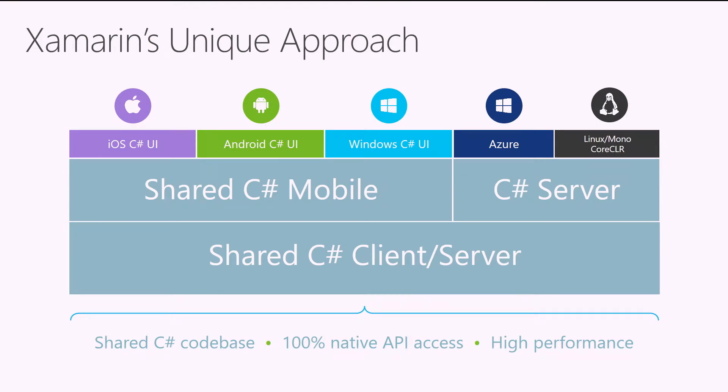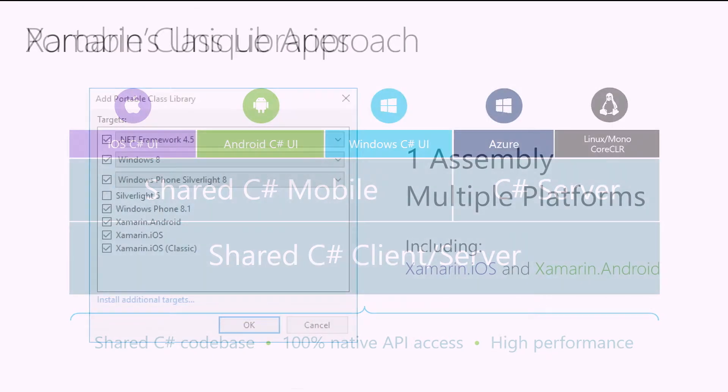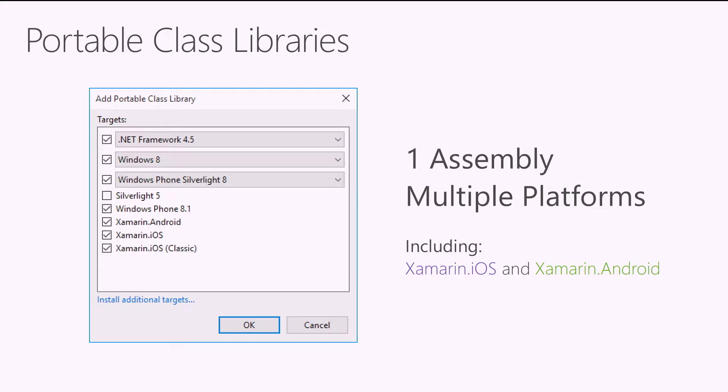When developers are looking to share code, the first place we point them is portable class libraries (PCLs). A PCL is essentially a class library. You could create an Android class library with all the .NET and Android stuff inside it, but you can't take an Android class library and pull it into an iOS application. Similarly, a .NET 4.5 library may not be compatible with other platforms that don't have all of .NET.